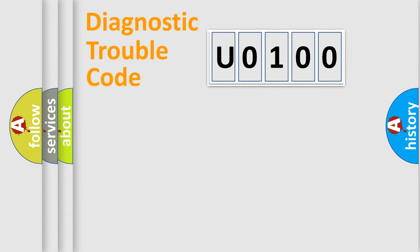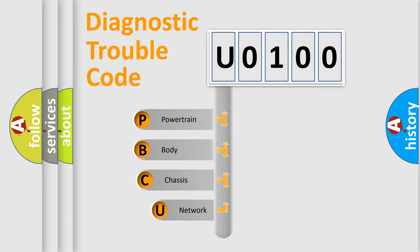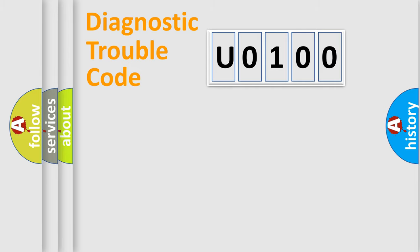First, let's look at the history of diagnostic fault code composition according to the OBD2 protocol, which is unified for all automakers since 2000. We divide the electric system of the automobile into four basic units: Powertrain, body, chassis, and network.